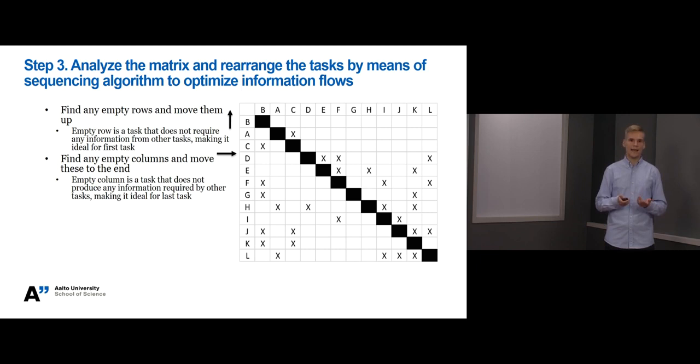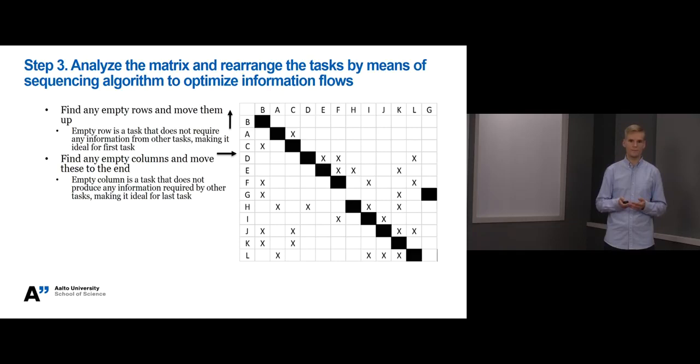What we can see is that task G produces no information to other tasks, so let's move it to the end. Please, remember always to move the respective row as well so that the diagonal follows correctly.